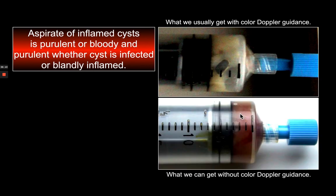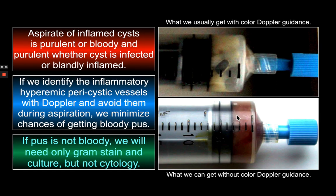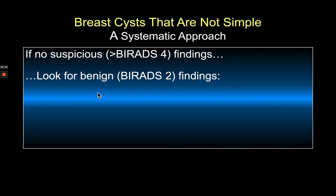Typical pus aspirated from an inflamed cyst can be obtained cleanly using Doppler guidance to avoid pericystic inflammatory vessels, yielding plain yellow pus rather than hemorrhagic pus. If we get plain pus, we only need a gram stain and culture, not cytology or flow cytometry. If we get hemorrhagic pus — from passing through a vessel — we're obligated to run additional analyses for little gain.